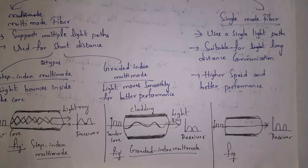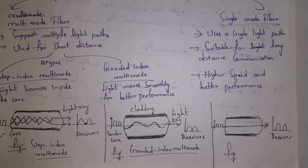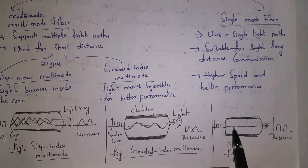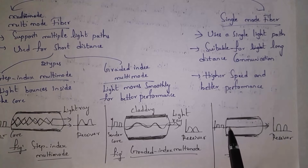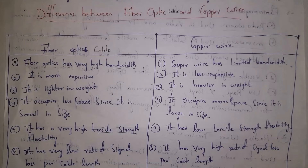Single mode fiber has only a single light path through which data travels. It is suitable for longer distance communication — since there is only one path, data travels smoothly, giving high speed, long distance, and better performance.